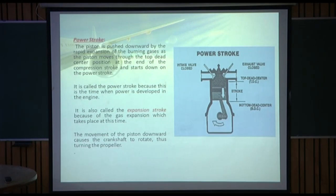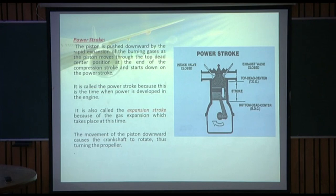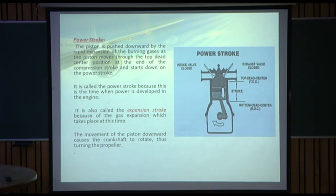Coming to the power stroke: the piston is pushed downward by the rapid expansion of the burning gases as it moves through top dead center and starts down on the power stroke. Once ignition has taken place and the fuel-air charge has burnt, the heat and pressure forces the piston from TDC to BDC. This is also called the expansion stroke. The movement of the piston downward causes the crankshaft to rotate, thus turning the propeller.